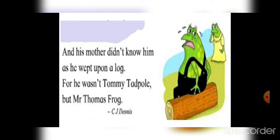For he wasn't Tommy Tadpole but Mr. Thomas Frog. The mother did not know why the tadpole was crying. The tadpole had lost his tail because he had grown up to a frog. This means a tadpole always grows and becomes an adult frog. Written by C.J. Dennis.